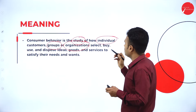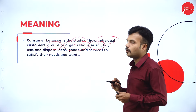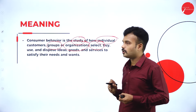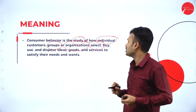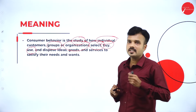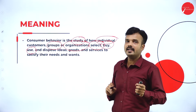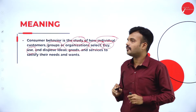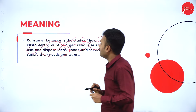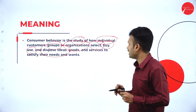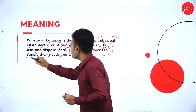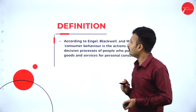What do individuals, groups, and organizations do? They select the product through a decision-making process, make a buying decision, then purchase the product. They use the product and after using it, they end up with either satisfaction or dissatisfaction, and then dispose of their ideas about that experience with the goods or services.